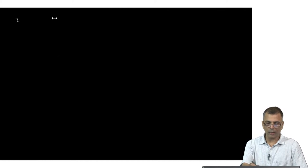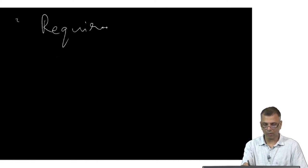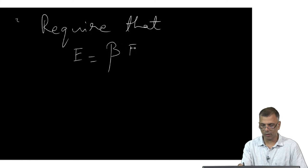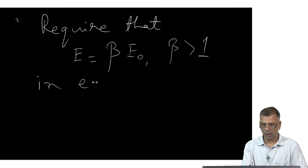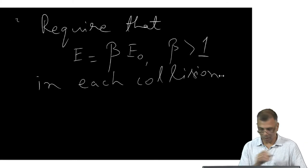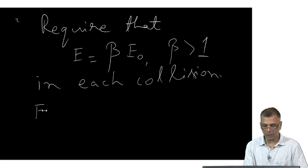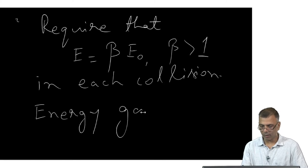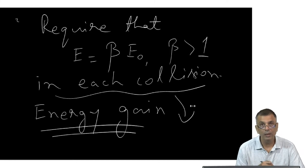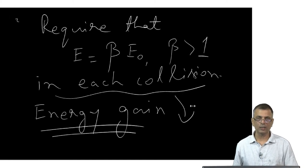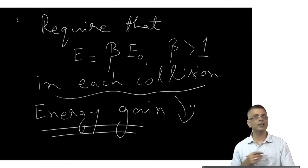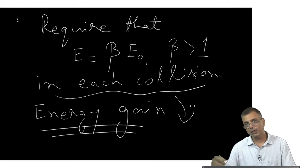One important thing to remember is that you require E equals beta times E-naught, with beta greater than 1 in each collision. In other words, you require an energy gain in each collision. Whatever the collisions with these scattering centers are, you want to ensure there is an energy gain in each collision, so that with each successive collision the energy of the particle keeps increasing.